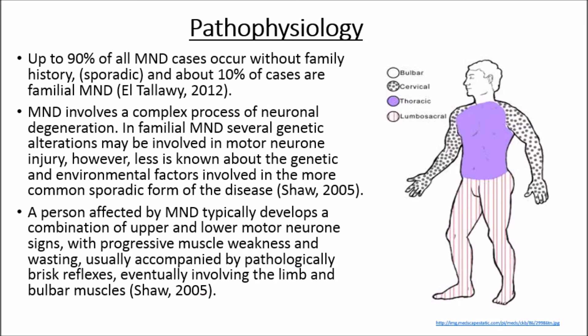Up to 90% of all MND cases occur without family history; this is known as sporadic MND, and about 10% of cases are familial MND. MND involves a complex process of neuronal degeneration. In familial MND, several genetic alterations may be involved in motor neurone injury; however, less is known about the genetic and environmental factors involved in the more common sporadic form of the disease.